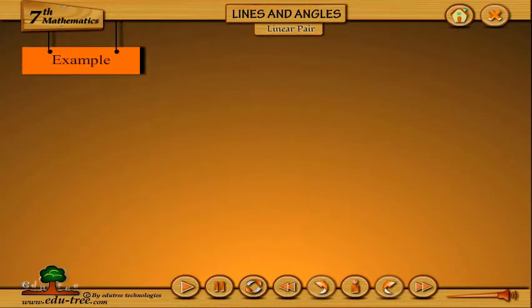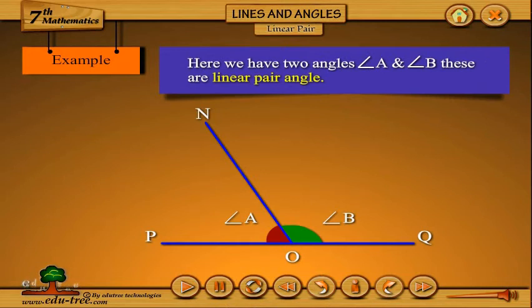Example. Here, we have two angles, Angle A and Angle B. These are linear pair angles.